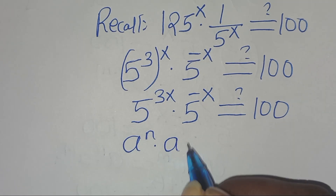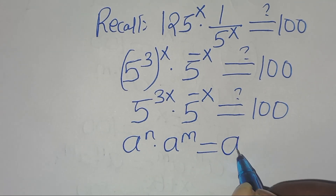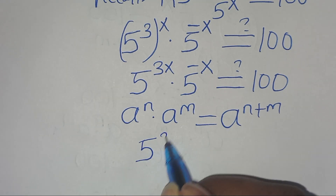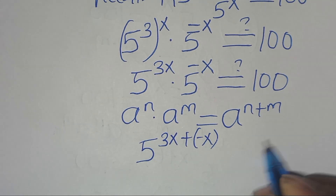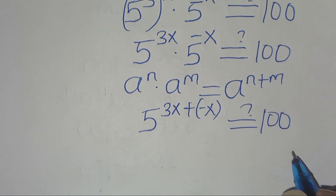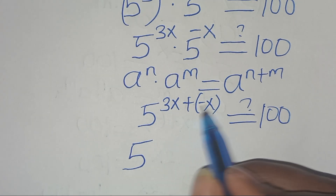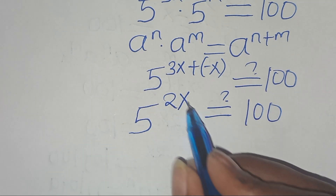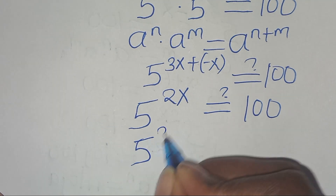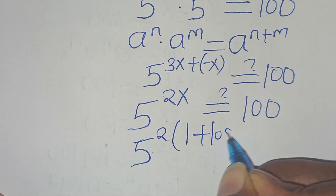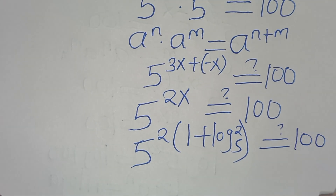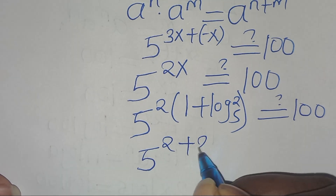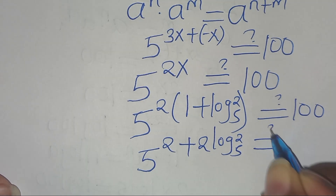So we need 5^(2x) to equal 100. Substituting x equals 1 plus log₅2: we have 5 to the power of 2 times (1 plus log₅2), which should give us 100. Expanding: 5 to the power of 2 plus 2·log₅2 should equal 100.